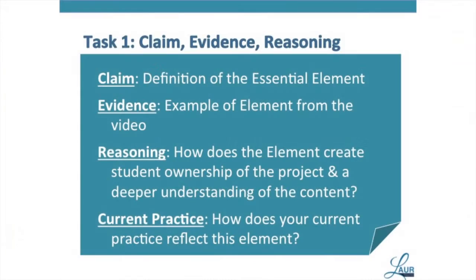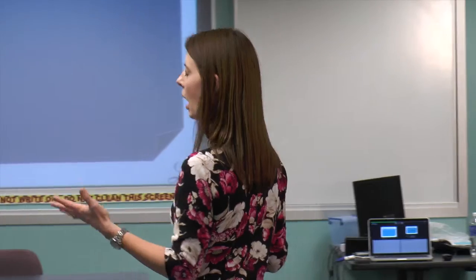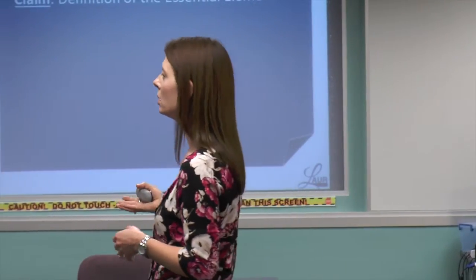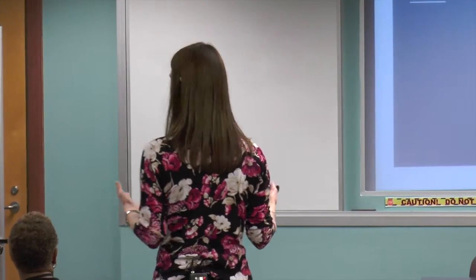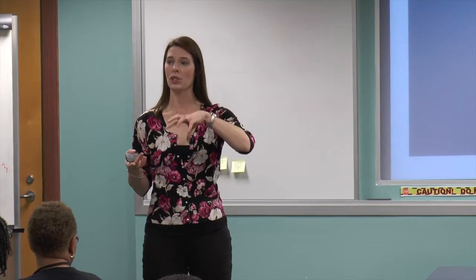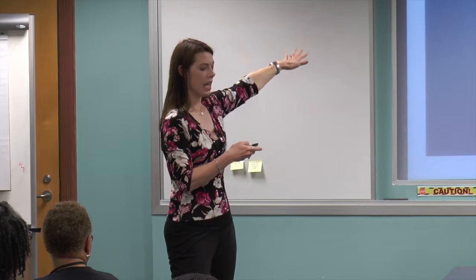What we want first and foremost is our claim. Our claim is going to be the definition — the definition of what that element is. So if you have 'public audience,' what and how would we define it? To help you with that definition, if we go back to my wiki page where it says 'project design' and click on the article that says 'eight essential elements article,' it's an article I wrote that walks you through a particular project. You can hone in on the section that talks about your particular element, and that's going to help you with the claim.